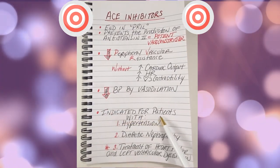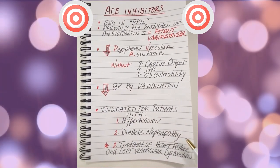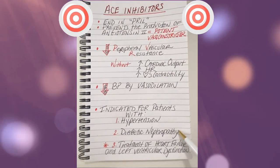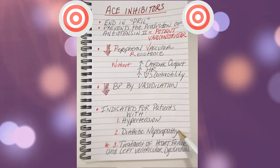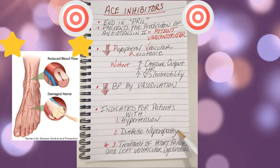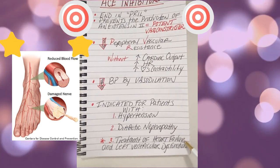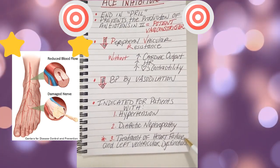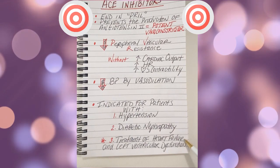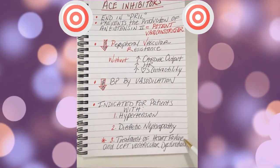ACE inhibitors are indicated for patients with acute or chronic high blood pressure, as well as diabetic nephropathy due to kidney disease. They are also used in combination with other medications like digoxin and diuretics in treating left ventricular dysfunction and heart failure.